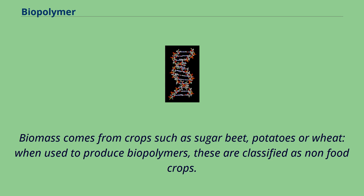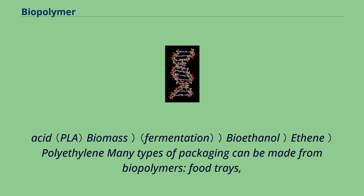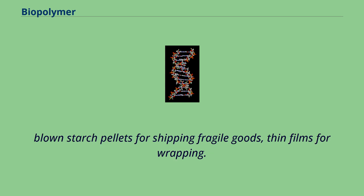These can be converted in the following pathways: sugar beet → glycolic acid → polyglycolic acid; starch → lactic acid → polylactic acid; biomass → bioethanol → ethene → polyethylene. Many types of packaging can be made from biopolymers: food trays, blown starch pellets for shipping fragile goods, and thin films for wrapping.